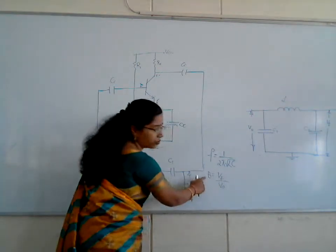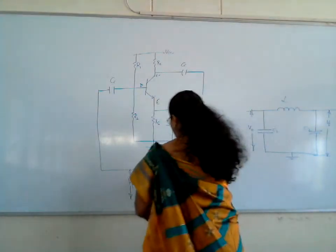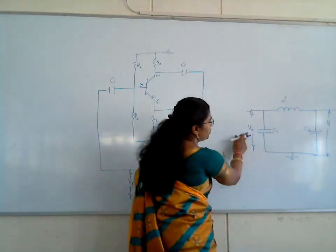Vf by V0 is β. Now, coming to this circuit, across C2 we have Vf, and across C1 we have V0.